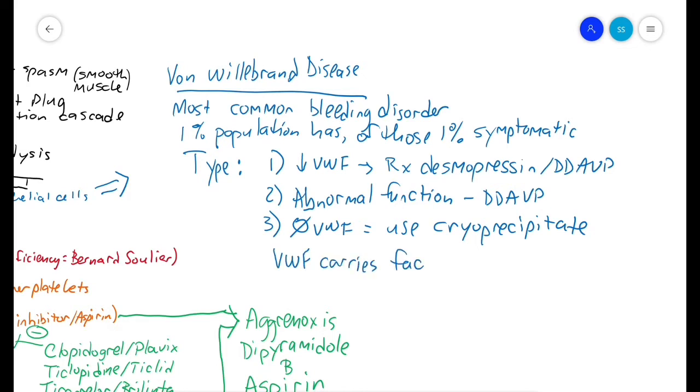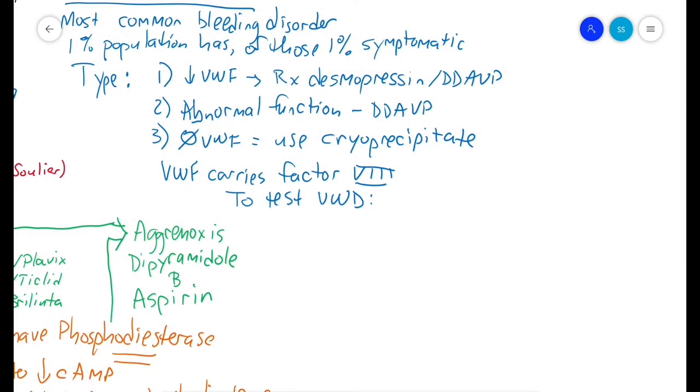The function of von Willebrand factor is to carry factor 8. To test for von Willebrand disease, you can test for plasma von Willebrand factor antigen, there's a ristocetin test, and you can test directly for factor 8 activity. The ristocetin test seems to show up on the ABSITE most commonly.